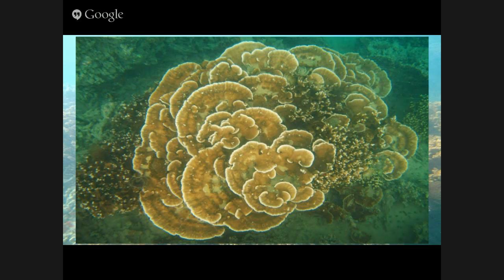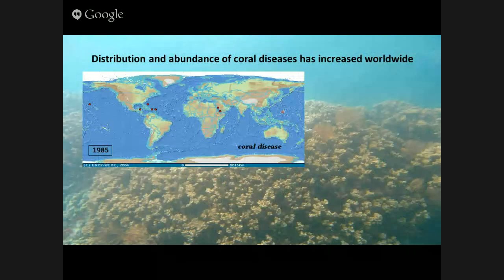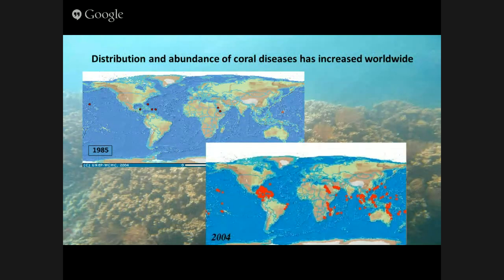Unfortunately, coral reefs have been declining over the past several decades, and there's a variety of threats, one of which is coral diseases. It's kind of hard to imagine disease in a really simple animal like this, but think of gangrene or a flesh-eating bacteria eating away at your muscle tissue — that's what it looks like when corals get disease. They lose their tissue. Thirty years ago we maybe saw patches here and there, but by 2004, reports were coming from all over the world. Hawaii is no exception to coral disease, and this is why I'm passionate about this particular threat — it can be really devastating.